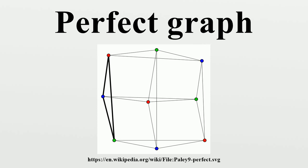Chordal graphs — the graphs in which every cycle of four or more vertices has a chord, an edge between two vertices that are not consecutive in the cycle — include the forests, K-trees, split graphs, block graphs, interval graphs, trivially perfect graphs, threshold graphs, windmill graphs, and strongly chordal graphs. Comparability graphs, formed from partially ordered sets by connecting pairs of elements by an edge whenever they are related in the partial order, include the bipartite graphs, the complements of interval graphs, the trivially perfect graphs, the threshold graphs, the windmill graphs, the permutation graphs, and the K-graphs.